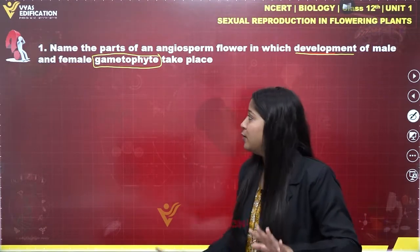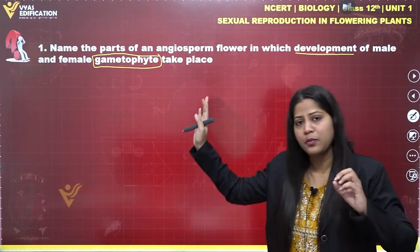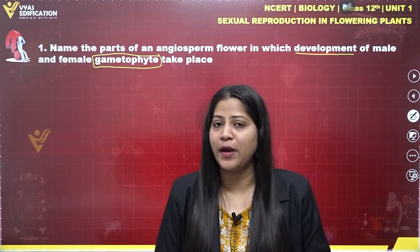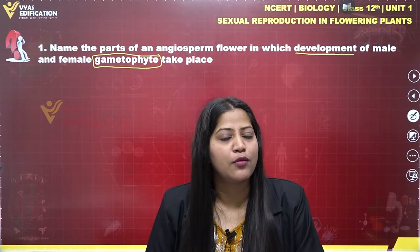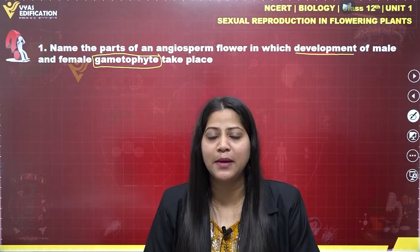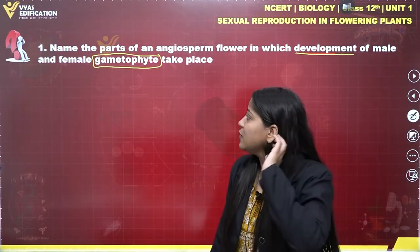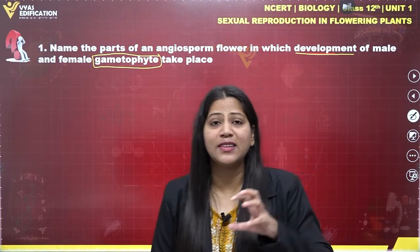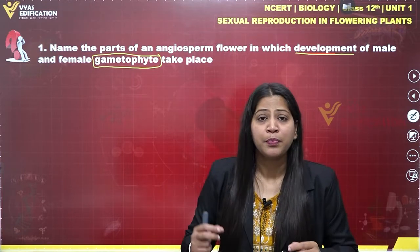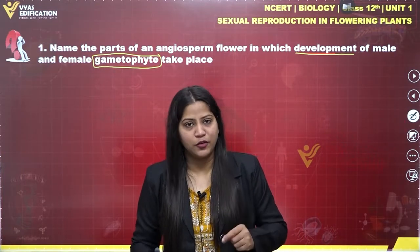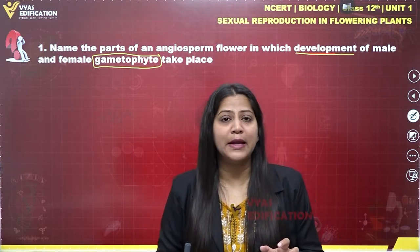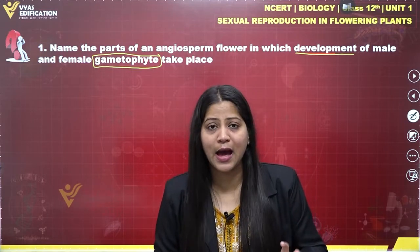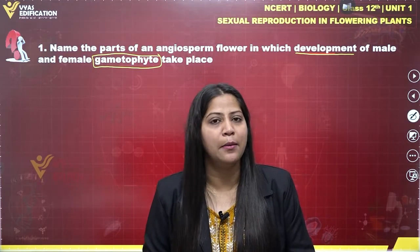So gametophyte — any structure which is going to give rise to gametes — can be of two types: male gametophyte and female gametophyte. In case of angiospermic plants or flowering plants, as we are studying sexual reproduction in flowering plants, we have male gametophyte as pollen grains and female gametophyte as embryo sac.